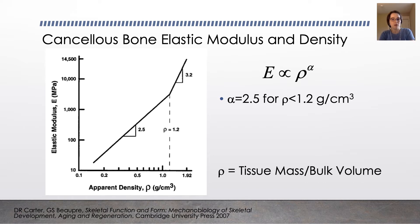Below 1.2 grams per cubic centimeter, that power law is characterized by a coefficient of 2.5. And above 1.2 grams per cubic centimeter, it's characterized by a coefficient of about 3.2. So you can see that the more dense your bone is, the stiffer your bone is. And there's kind of that critical point right there at rho equals 1.2.